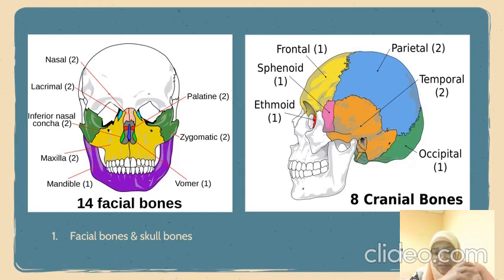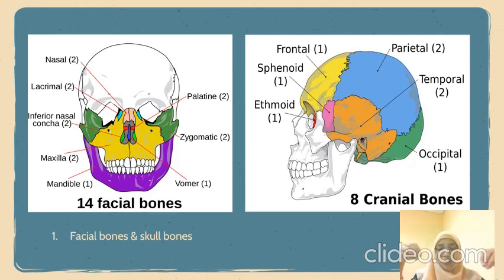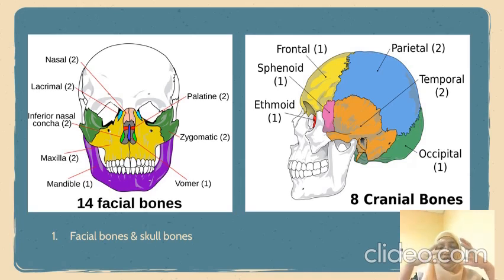The sphenoid bone is also an irregular bone that sits below the frontal bone. It spans the width of your skull and forms a large part of its base.